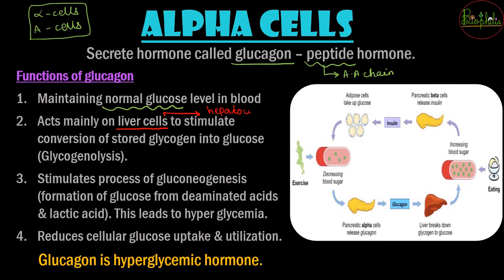The hepatocytes, when they receive signals from glucagon, help in the conversion of stored glycogen — stored in the liver — into glucose. This process of glycogenolysis is stimulated because of the release of glucagon. Once a large amount of glucose is released into the bloodstream, the blood glucose level is maintained.